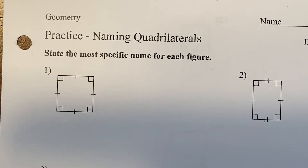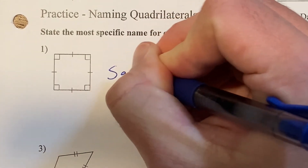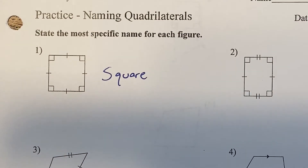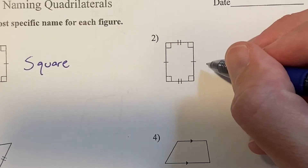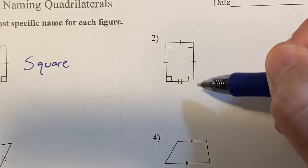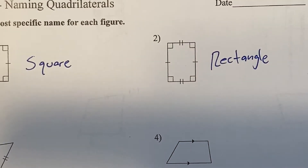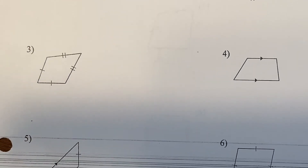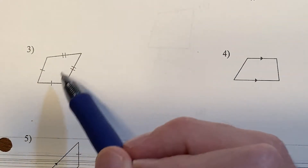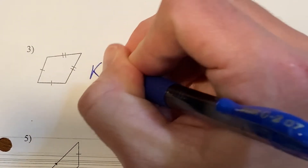We're going to review our quadrilaterals. Four equal sides and four right angles — this is a square. We're just naming the quadrilaterals here, nothing too crazy. This one has four right angles but all four sides are not equal — opposite sides are equal. When I have four right angles and opposite sides are equal, this is a rectangle. Number three: two sets of congruent adjacent sides — adjacent meaning right next door to each other — so this would be a kite.